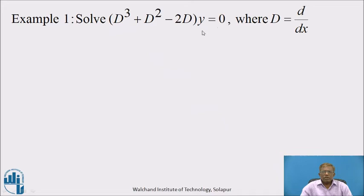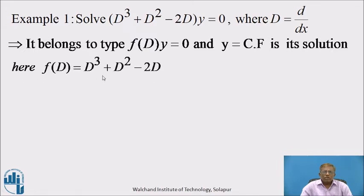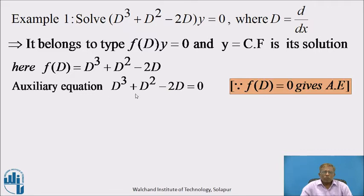In this differential equation, y is a dependent variable and capital D = d/dx indicates that x is an independent variable. The solution of this differential equation is y = CF, because this differential equation is of the type f(D) · y = 0. It is a homogeneous linear differential equation whose solution contains only the complementary function. Therefore y = CF is its solution. Here f(D) is D³ + D² − 2D, and to get the auxiliary equation, equate f(D) = 0. Therefore D³ + D² − 2D = 0 is the auxiliary equation.